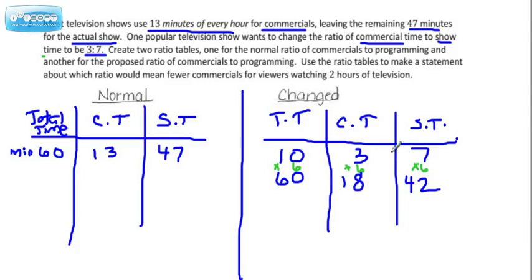So that means following this ratio, for a one-hour show, which is 60 minutes, we have 18 minutes of commercials, 42 minutes for the actual show. And these two numbers do add up to be 60.